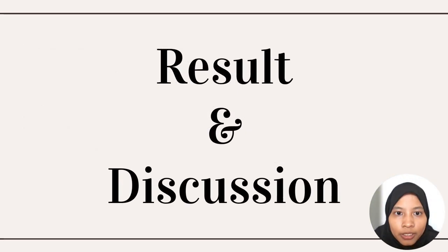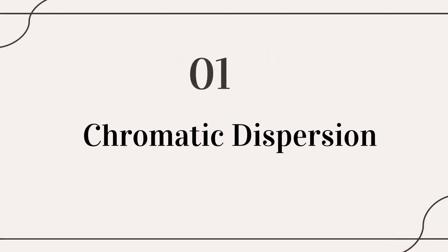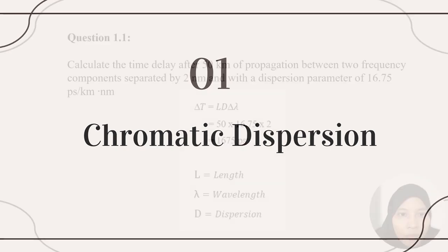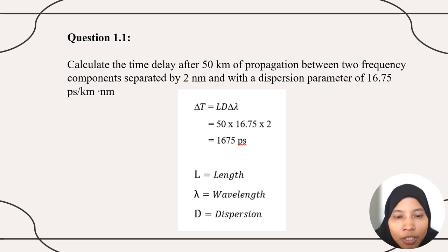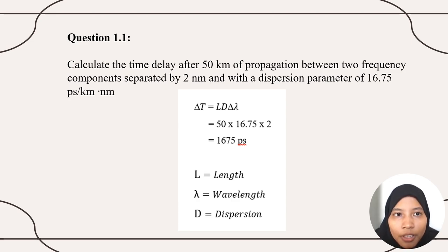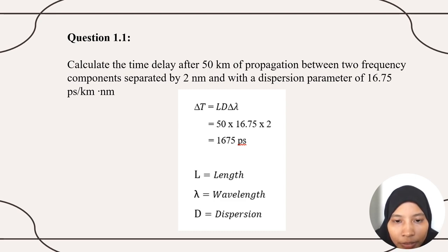For question 1.1: calculate the time delay after 50 kilometers of propagation between two frequency components separated by 2 nm, with a dispersion parameter of 16.75. Using the formula delta-t equals L times D times delta-lambda, the time delay is calculated to be 165 picoseconds.